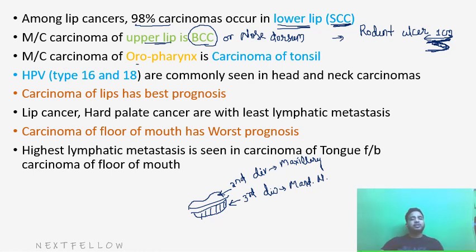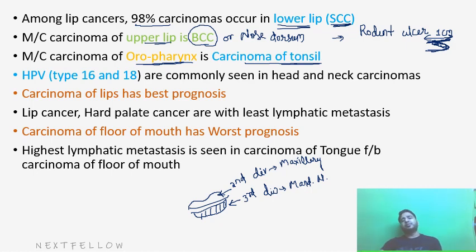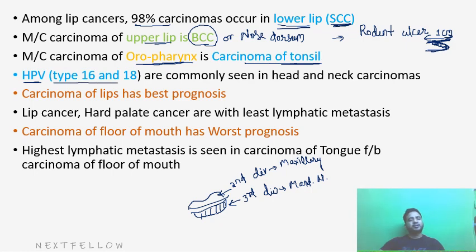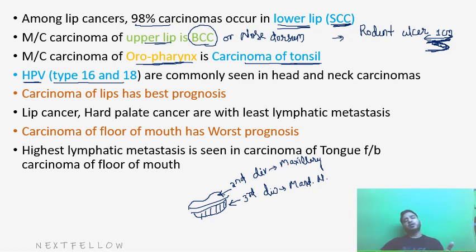What is the most common carcinoma of the oropharynx? In the oropharynx, the most common carcinoma is carcinoma of the tonsil. The tonsil is a part of the oropharynx situated between the anterior and posterior pillar. It has been seen that human papilloma virus numbers 16 and 18 are commonly seen in head and neck carcinomas, as well as in cervical carcinoma.